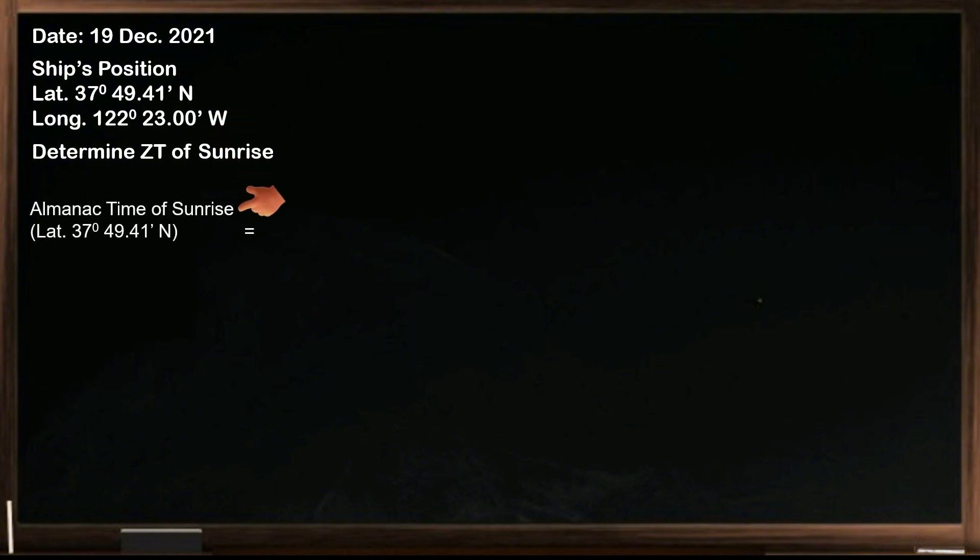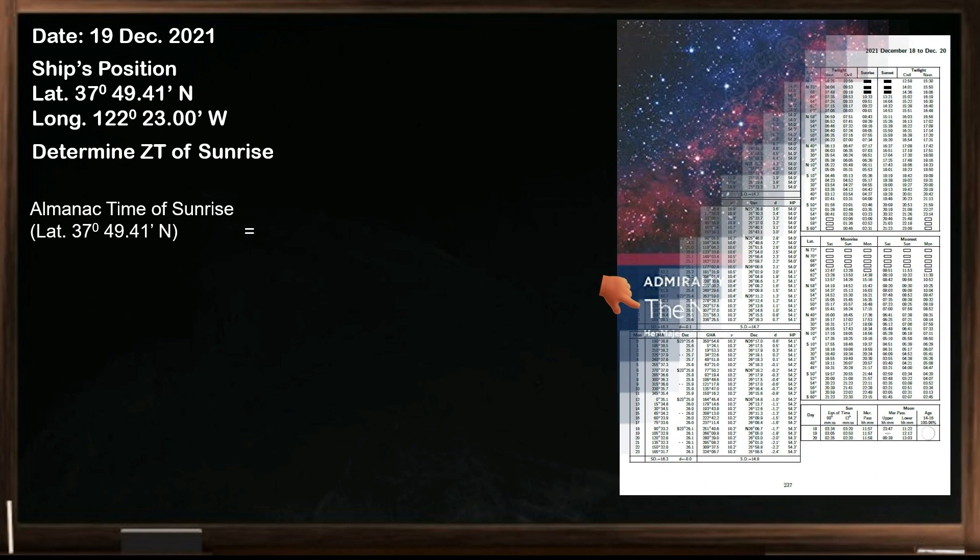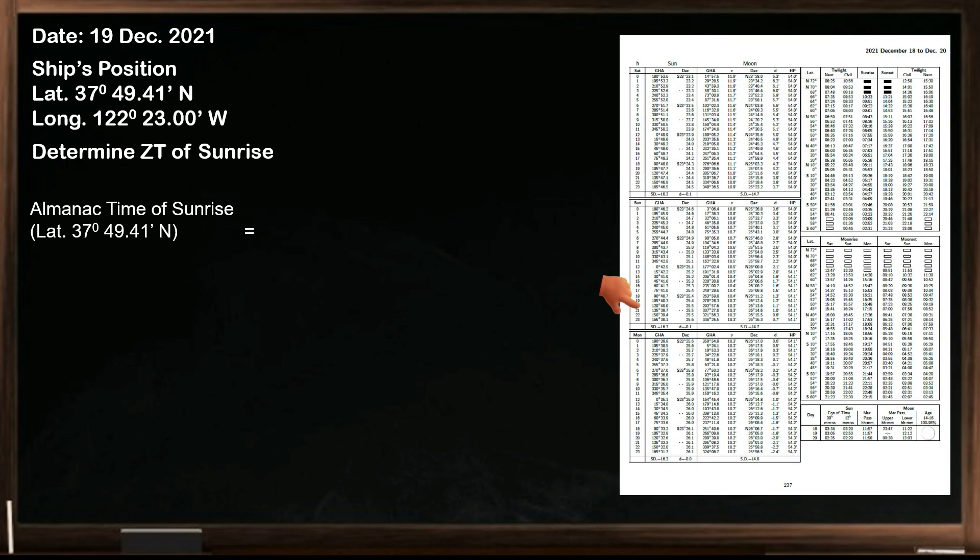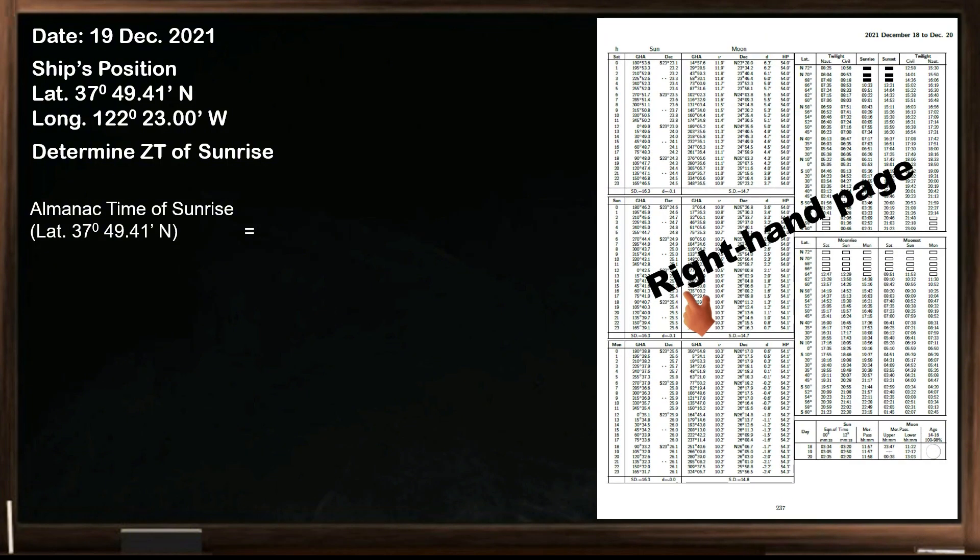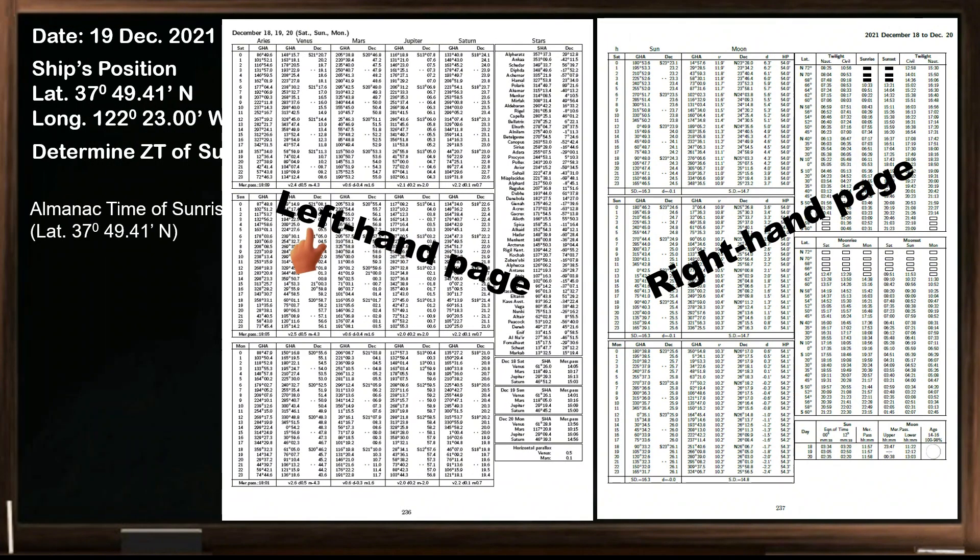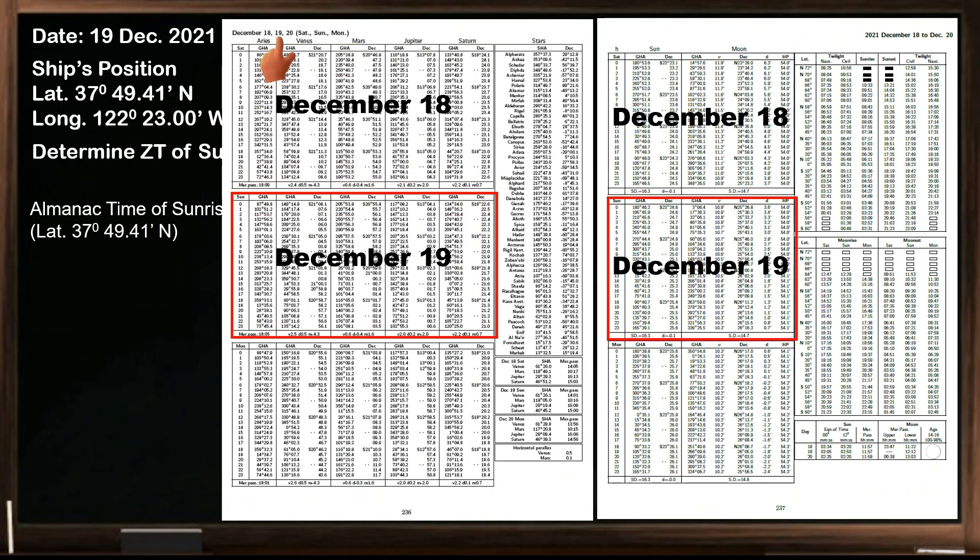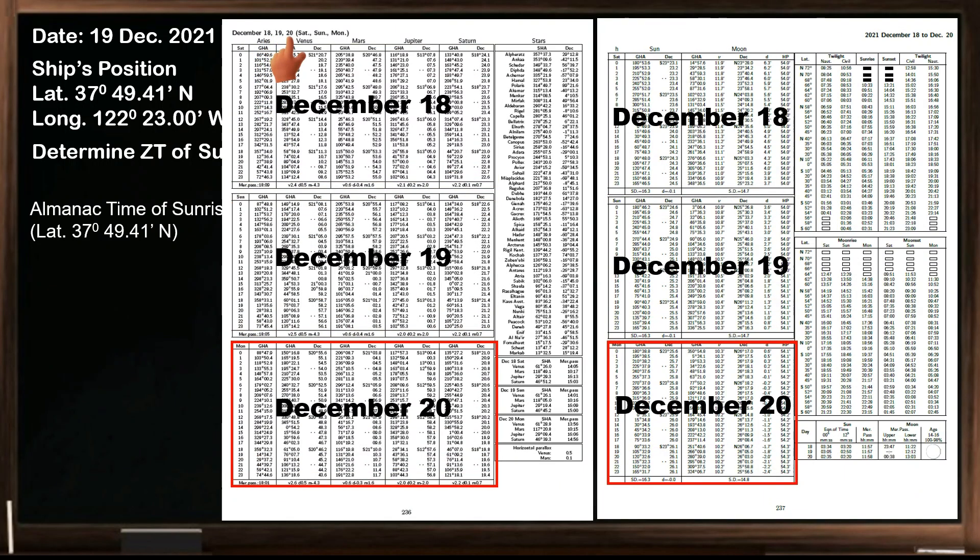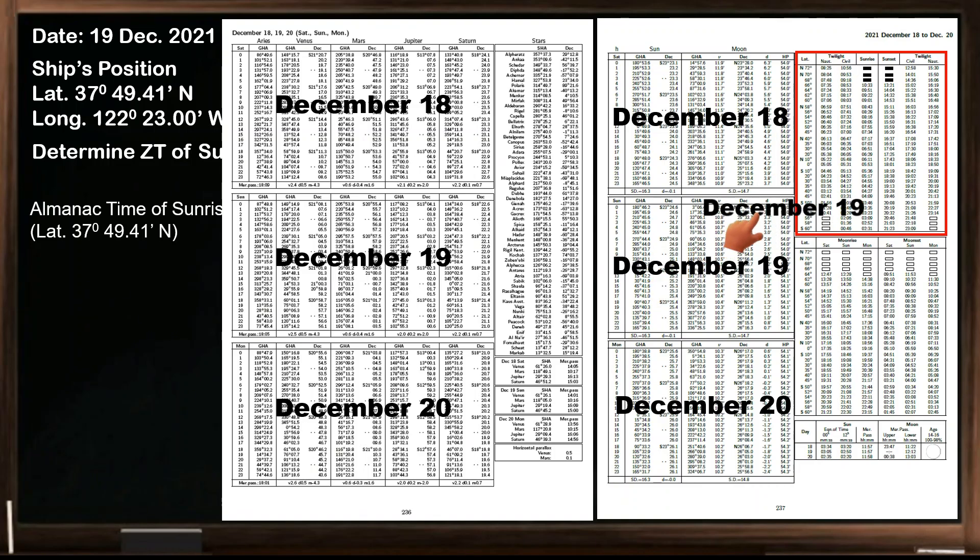First, extract the time of sunrise for the observer's latitude on the given date from the Nautical Almanac. Open the daily pages of the Nautical Almanac for December 19th. This is the right-hand page and the left-hand page of December 18th, 19, and 20. You can find the time of sunrise and sunset on the right-hand page together with twilights. The given time in this table is for the middle day, which is December 19th.